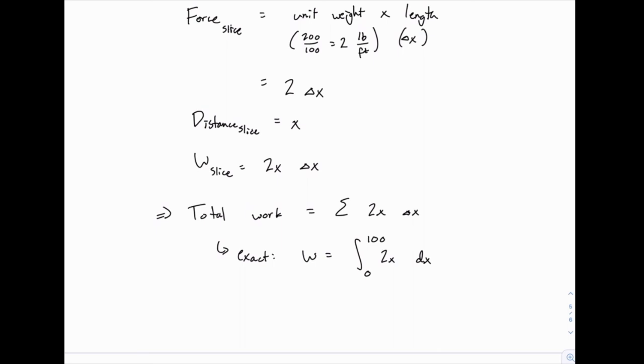And the hard work is done here. We've got the integral set up, the integral is a very easy one to work out. So if you're focusing on this problem, make sure you focus on the setup, make sure you understand where all these pieces came from, and that you could do one just like it. Integrating, of course, gives us x squared from zero to 100. So that would be 100 squared minus zero squared, or 10,000 pound feet or foot pounds. That's the amount of work. And of course we're using English units, so we get pound feet at the end.